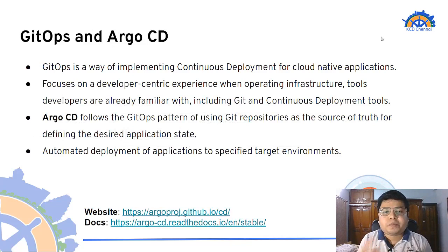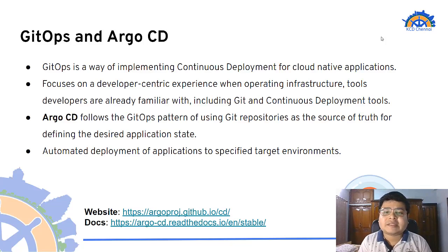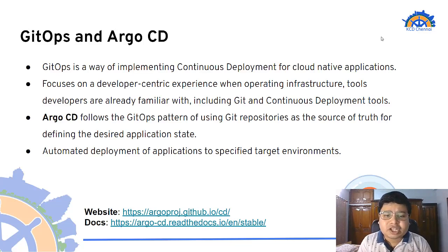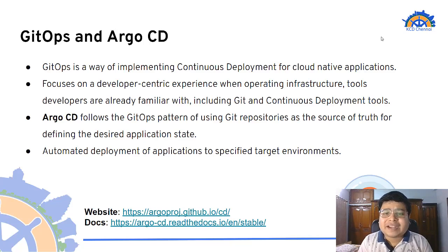Now let's understand GitOps and Argo CD. GitOps is a way of implementing continuous deployment for cloud-native applications, focusing on a developer-centric experience when operating with infrastructure, using tools developers are already familiar with including Git and other continuous deployment tools. Argo CD follows the GitOps pattern of using Git repositories as a single source of truth for defining the desired application state. Its main feature is automated deployment of applications to specified target environments.